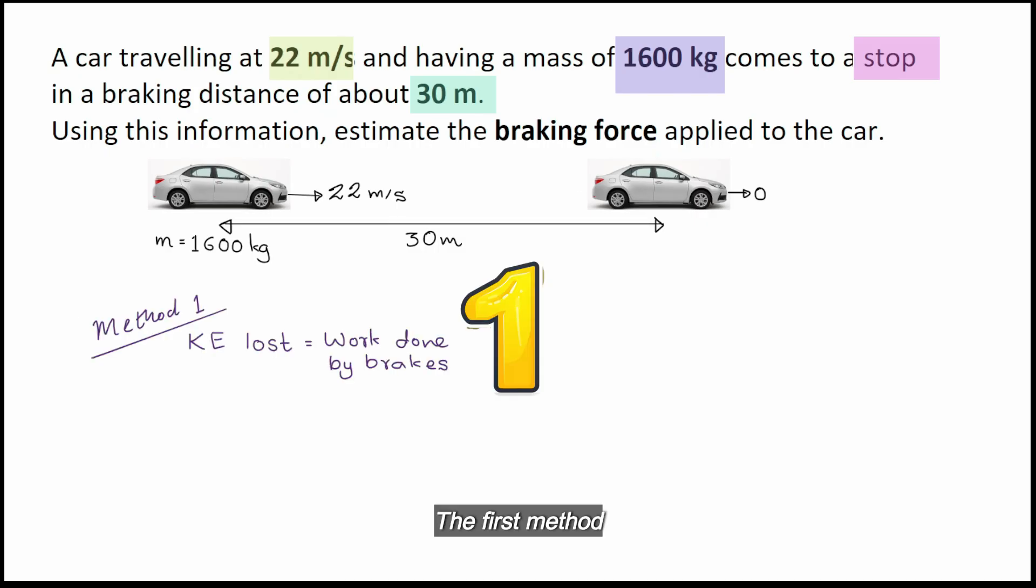Method one: The first method is to write kinetic energy lost is equal to work done by the brakes. Because the car is moving because of kinetic energy, if you can work out the kinetic energy of the car and equate it to work done by brakes, I should be able to get the force. Kinetic energy is given by the formula 1/2 mv squared. Work done by a force is force multiplied by distance.